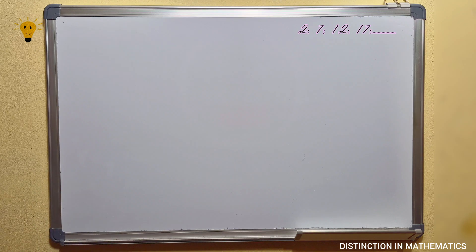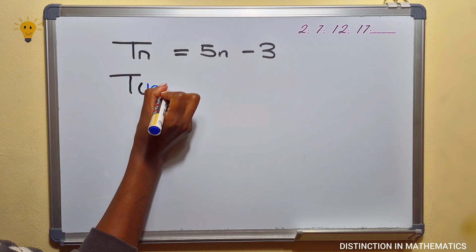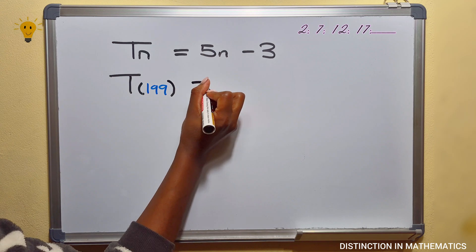Let's say they ask you to determine the 199th term of this sequence. Instead of n, we will have 199.